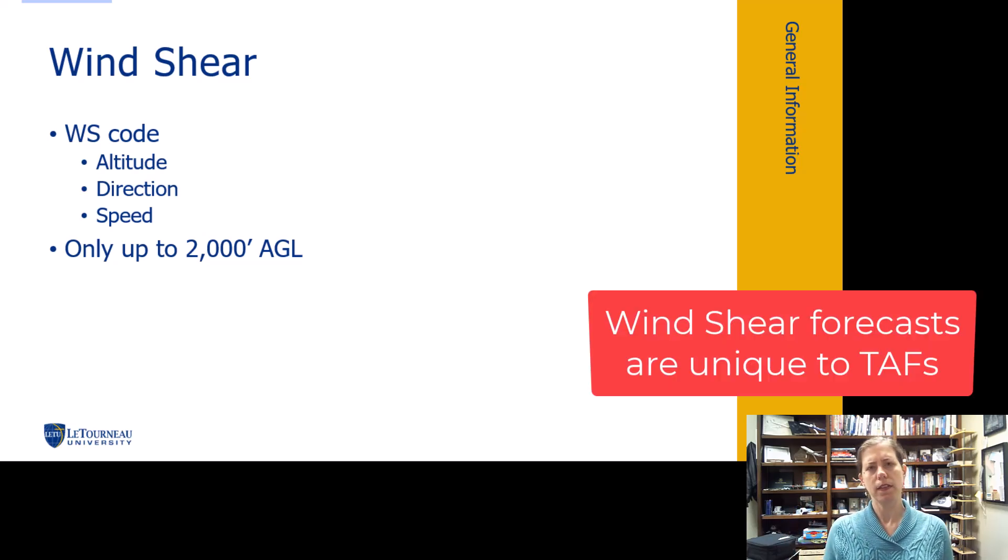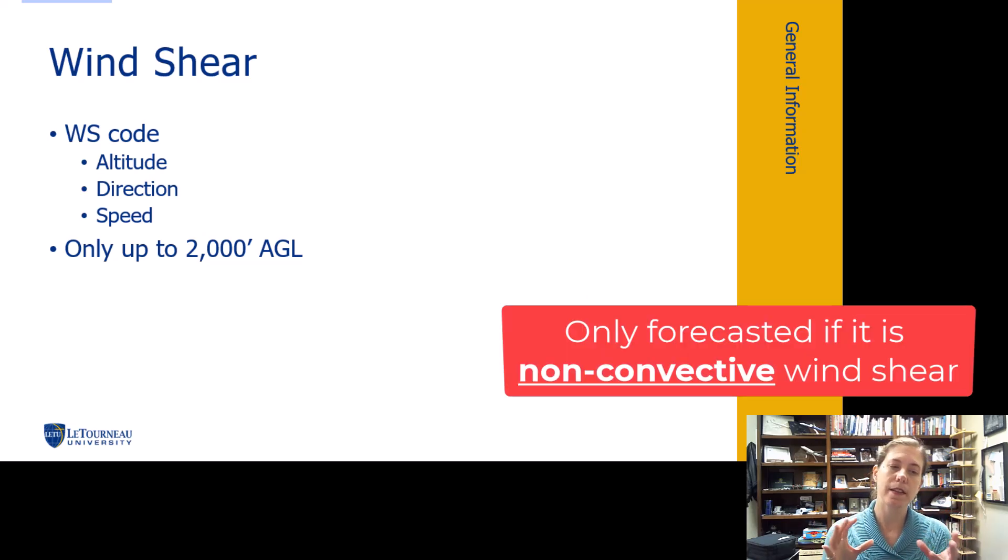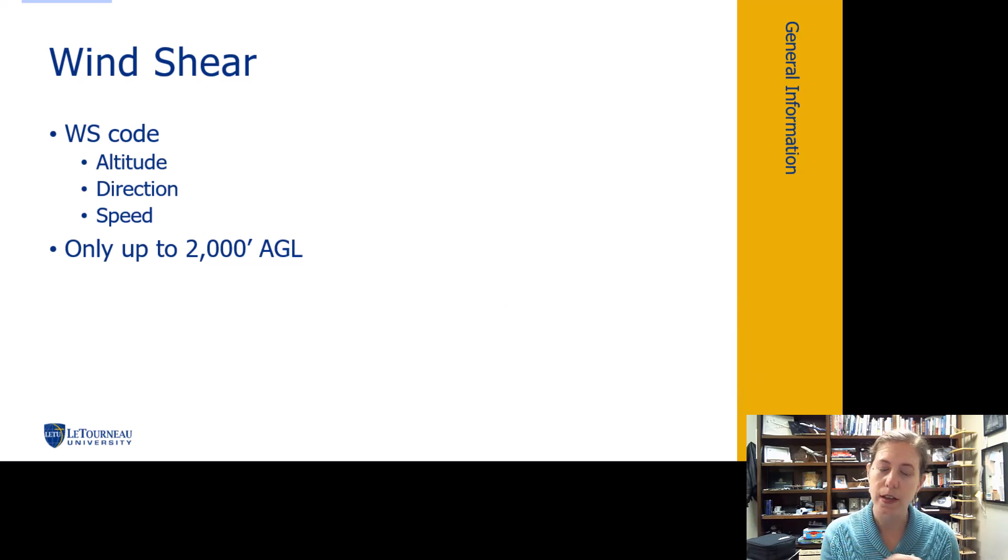Wind shear. This is forecast in the TAF, but it is only applies if we have non-convective wind shear activity. If we have convection, so thunderstorms, that's going to automatically imply wind shear. So we're not going to have a separate wind shear forecast to talk about it if we have thunderstorms in the area. But wind shear is forecast on non-convective type wind shear activity. It's only forecast up to 2,000 feet above the ground. And what they're going to include in the wind shear part of our forecast are three things. An altitude, the direction, and the speed.